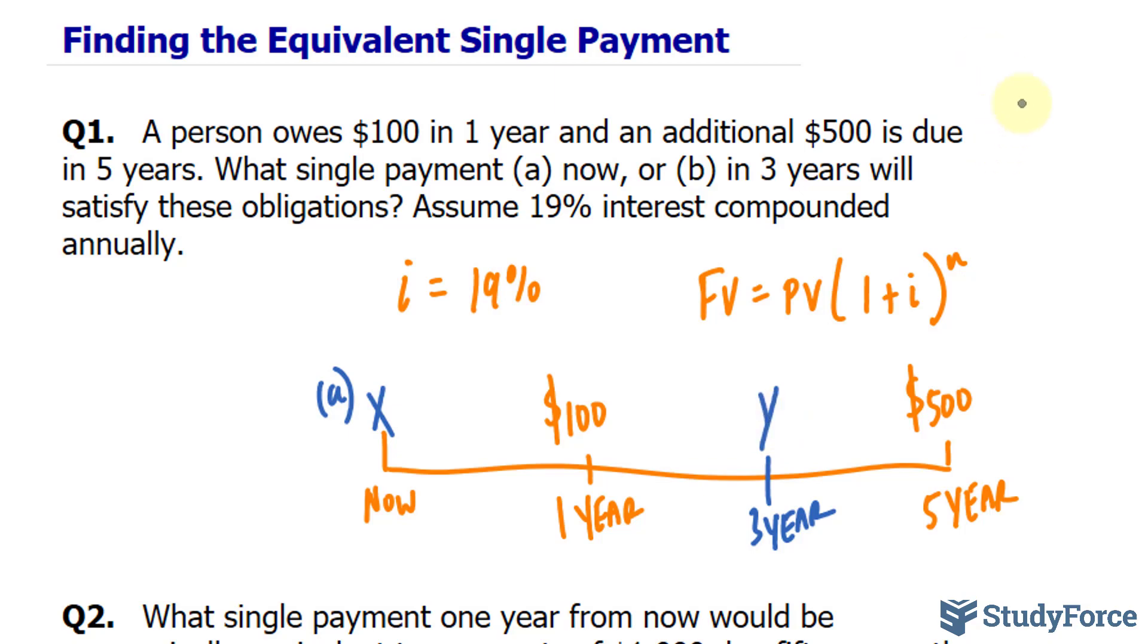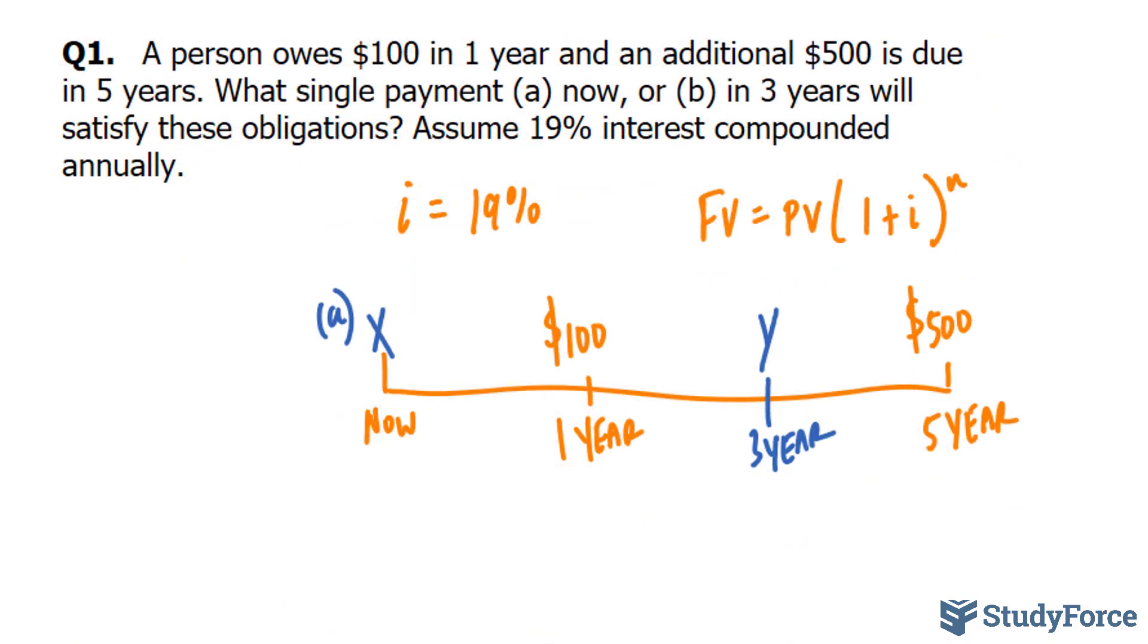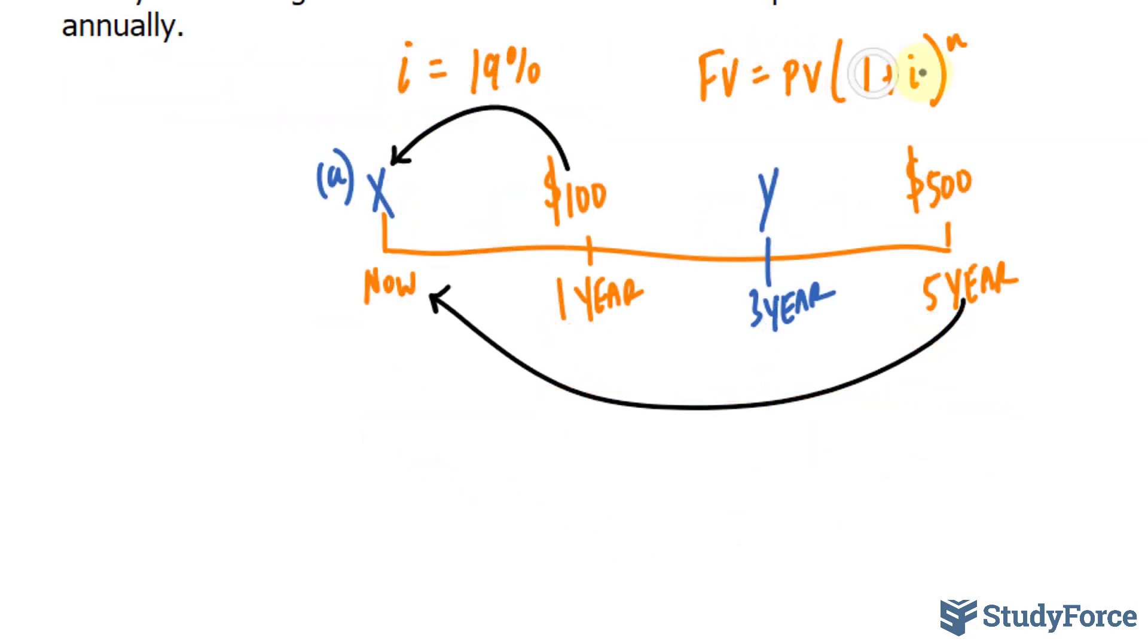We'll begin with question A. To do this question correctly, we have to discount this debt to the present and this debt to the present. We'll be using this formula twice, but since we're looking for the present value, the now, we need to isolate for PV. So to isolate for PV, we simply divide both sides by 1 plus i to the power of n. We'll be calculating the present value twice, once for this debt and once for that one. Then we'll sum them up.